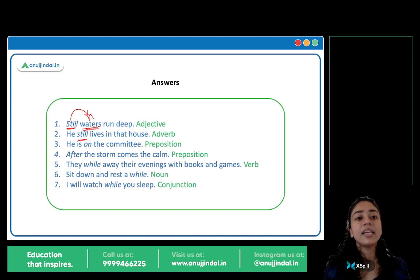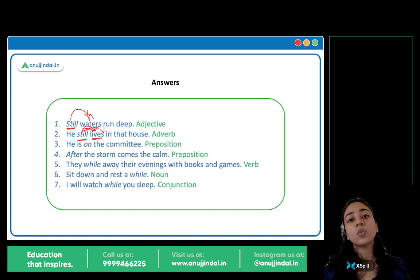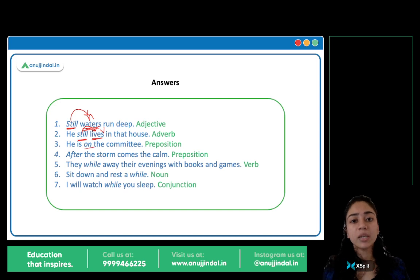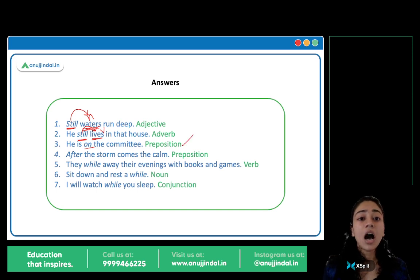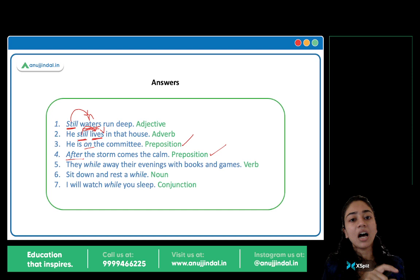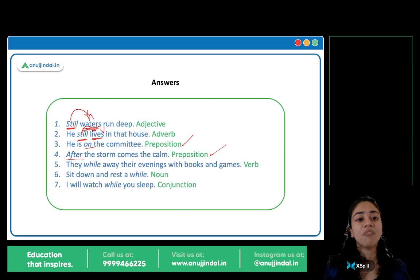'He is on the committee.' Yahaan pe position ki baat ho rahi hai — kahaan pe? On the committee. Toh preposition hai. 'After the storm comes the calm.' Yahaan pe bhi position ki baat ho rahi hai — storm ke baad. Pahle storm aata hai, aur after the storm comes the calm. Toh yahaan pe position ki baat ho rahi hai, toh after is a preposition.